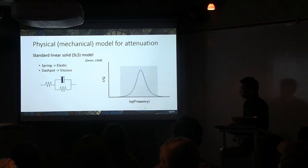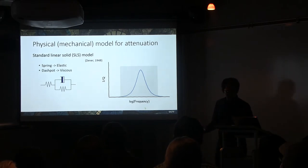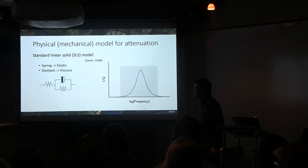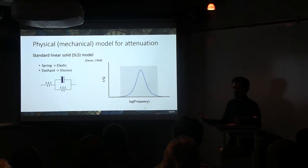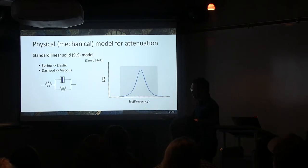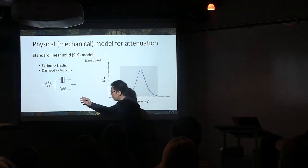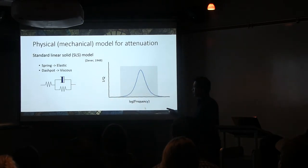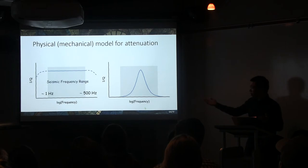To model this attenuation phenomena, people use some physical models, and basically by playing with some physical elements, namely the spring and dashpots. So, the spring exhibits an elastic behavior, while the dashpot has a viscous phenomenon. And among these rheological mechanical elements, one of the most popular ones is the standard linear solid model, the SLS. So, we got this model by connecting the spring and dashpot in this pattern. But the problem of this is that the Q spectrum has a peak, which is inconsistent with our observation in the frequency range, the seismic frequency range.